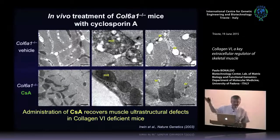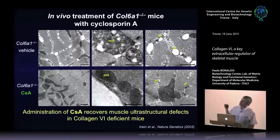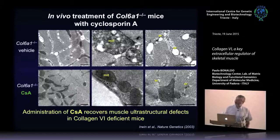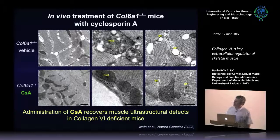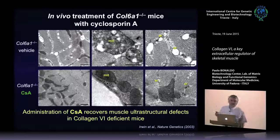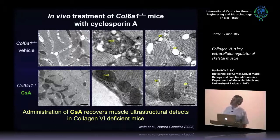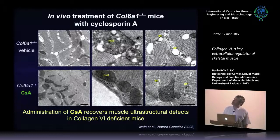This experiment allowed us to publish in 2003 the first milestone paper on this work — in Nature Genetics — showing that knockout of collagen 6 causes mitochondrial dysfunction and alteration of sarcoplasmic reticulum, which is reversible and can be recovered by addition of cyclosporin A. The reviewers were very excited about these experiments.